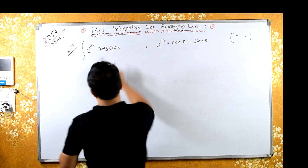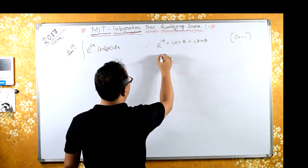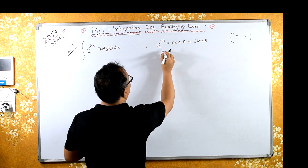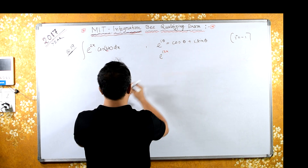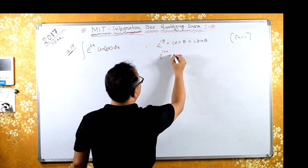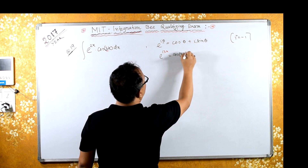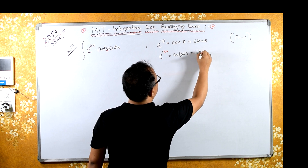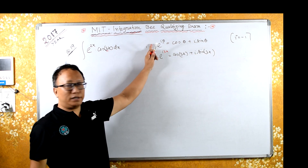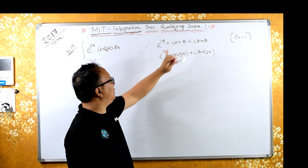Since we have 3x, I can write e raised to i·3x equals cos(3x) plus i·sin(3x). This is by Euler's theorem, for the complex number, where instead of theta I am substituting 3x.